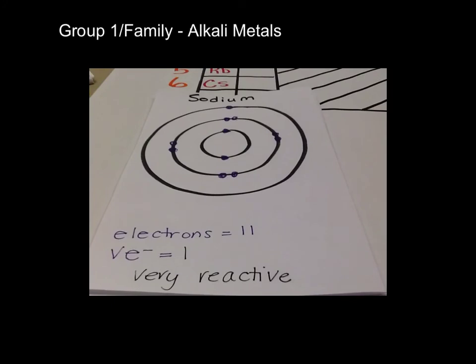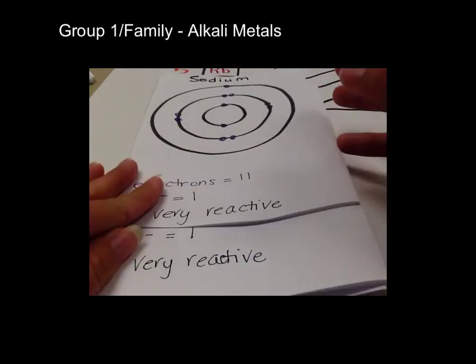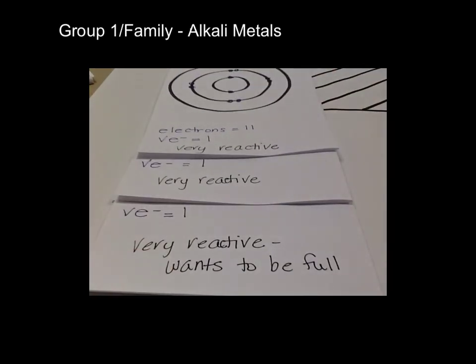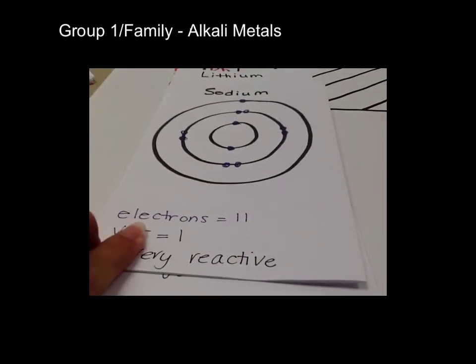Now, what did you just notice? All three of these elements are in group 1. And how many valence electrons did each one have? Each atom had one valence electron. So my next question is, do the group numbers help us determine valence electrons, or do we have to draw the Bohr diagram every single time?